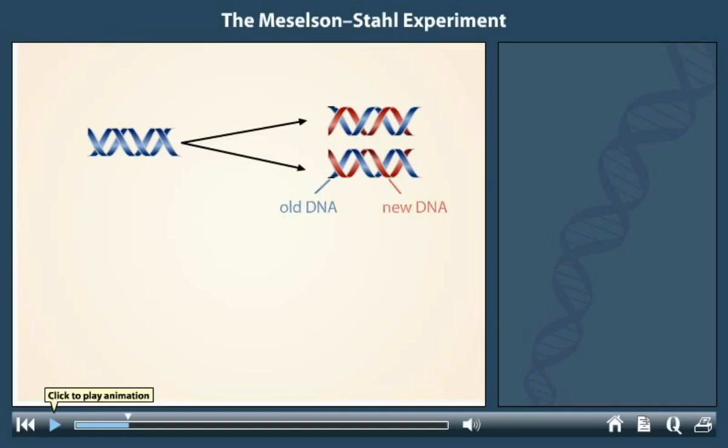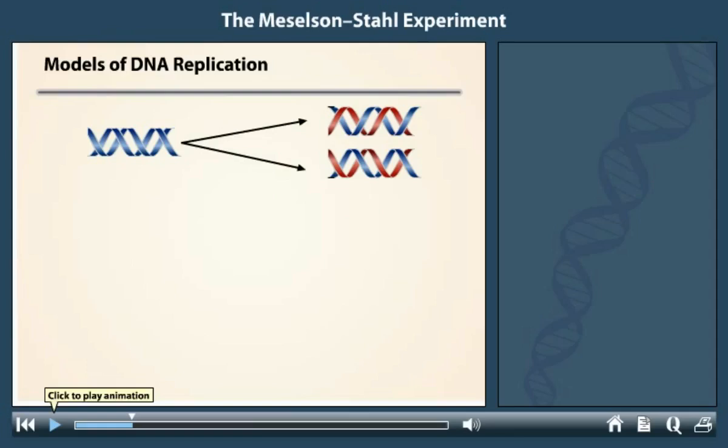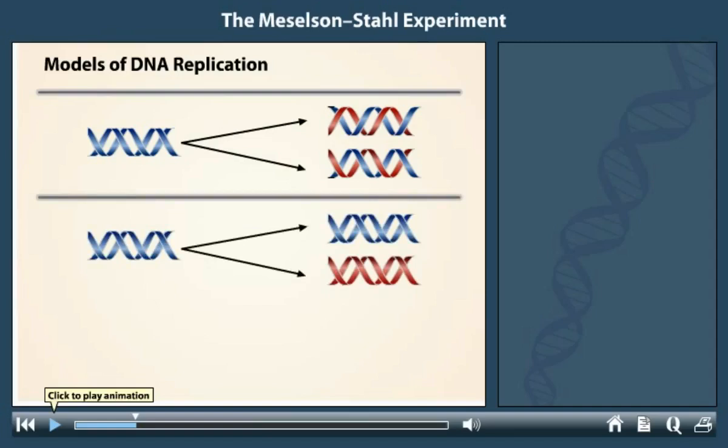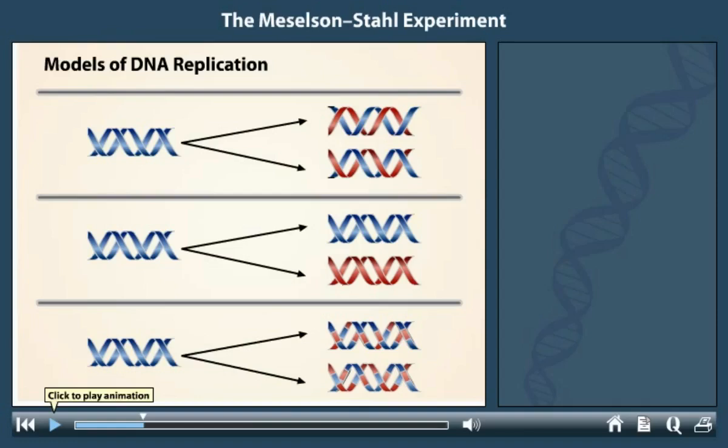There are other models to consider as well. For example, the old DNA molecule could be preserved and an entirely new DNA molecule could be produced from it. In yet another model, the result of replication would be two molecules with old and new DNA interspersed along each strand.